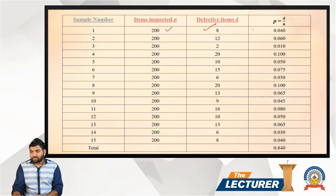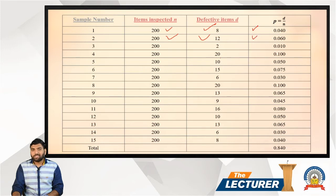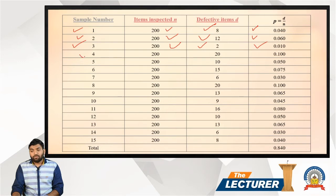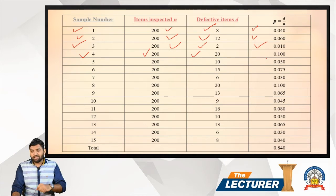For sample two: defective item is 12, divided by 200 = 0.060. For sample three: defective item is 2, divided by 200 = 0.010. For sample four: defective item is 20, divided by 200 = 0.100.